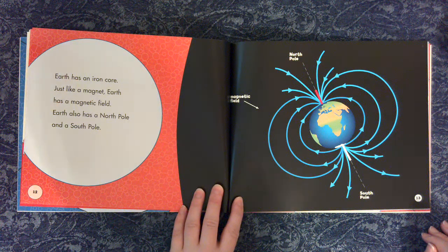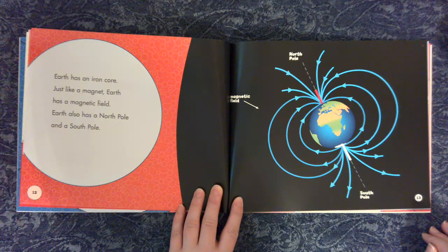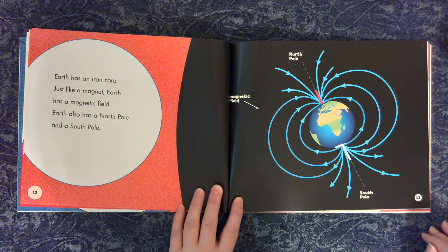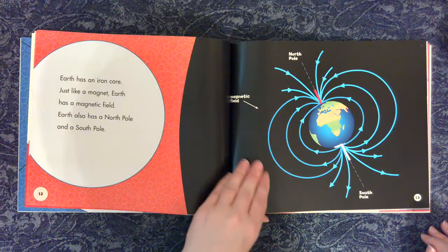Earth has an iron core. Just like a magnet, Earth has a magnetic field. Earth also has a north pole and a south pole. Magnetic field, north pole, south pole.